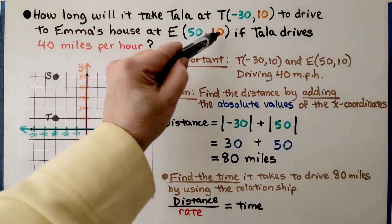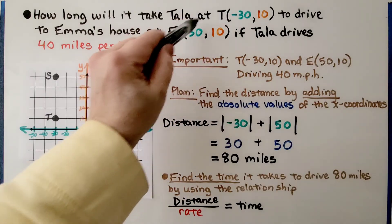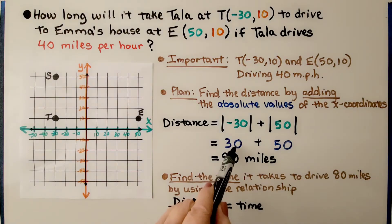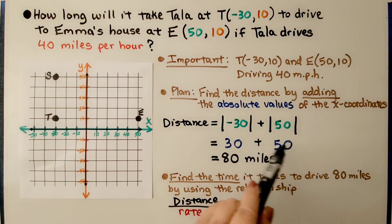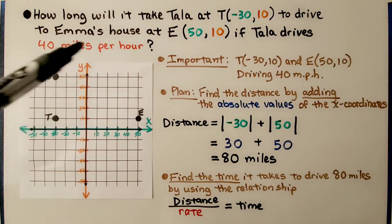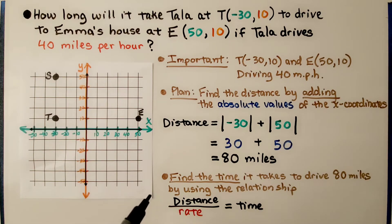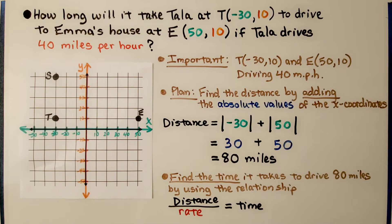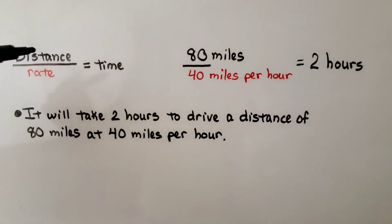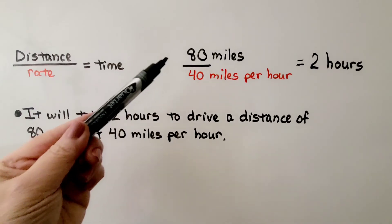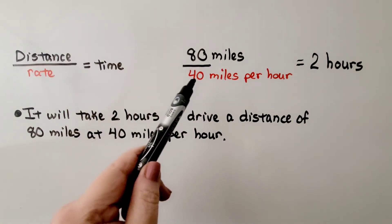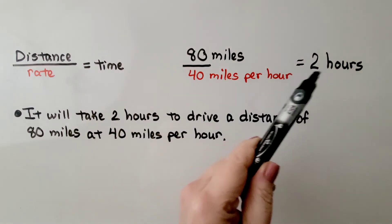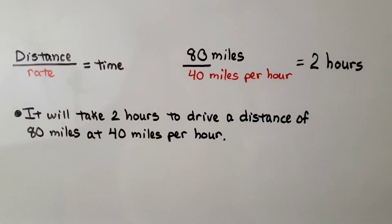The y-values are the same, so we use the x-coordinates. The absolute value of negative 30 is 30 and the absolute value of 50 is 50. We add 30 plus 50 to get 80 miles. To find how long it will take, we use distance divided by rate equals time. The distance is 80 miles and she drove 40 miles per hour. 80 divided by 40 equals 2, so it will take 2 hours to drive 80 miles at 40 miles per hour.